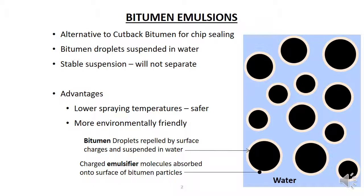This overcomes the surface charge and allows the bitumen droplets to combine and form a film. This process is called breaking. Breaking usually takes a few hours, and when it is complete, there is a strong layer of bitumen with chip embedded in it, with the same properties as a chip seal laid using cutback bitumen.